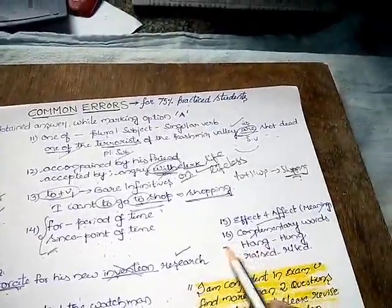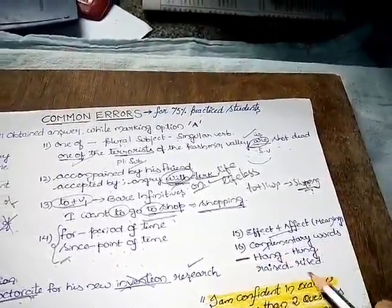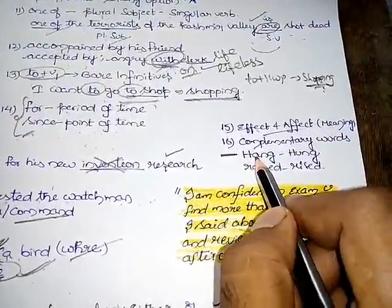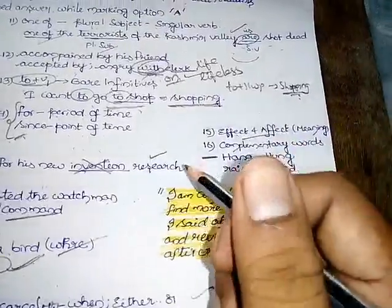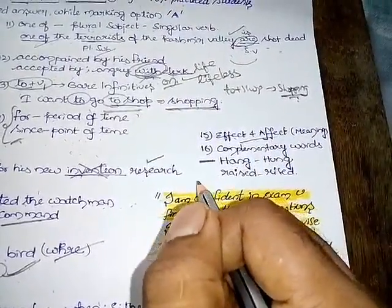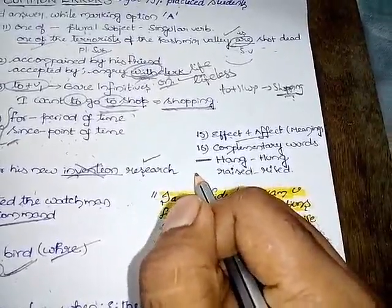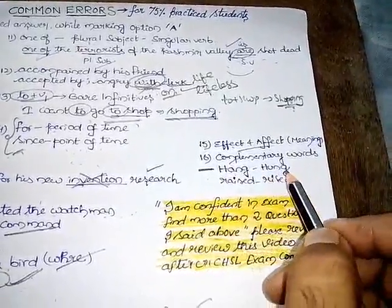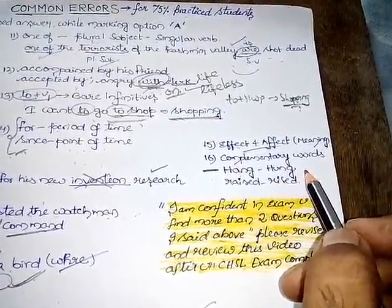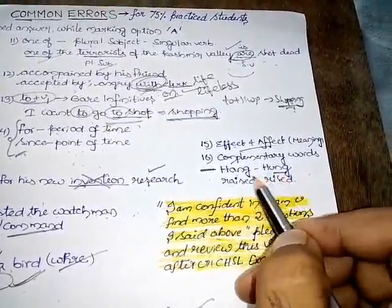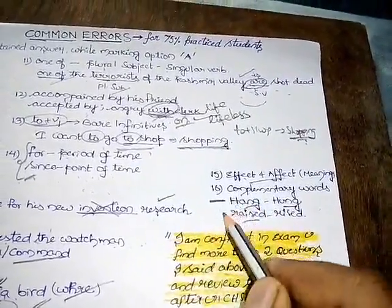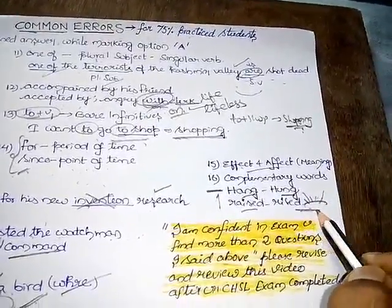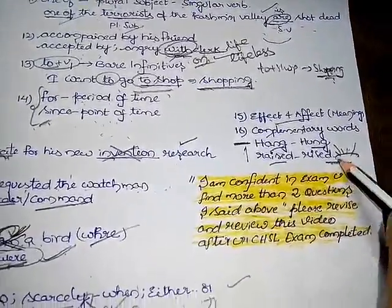That is last, complementary words. Hang means the judge given the decision to hang the person. Hang means I hang the newspaper or the portrait on the wall. Hang is different and hung is different. Rise means increase. Rise means sun rises in the east. It is the difference between hang and hung.